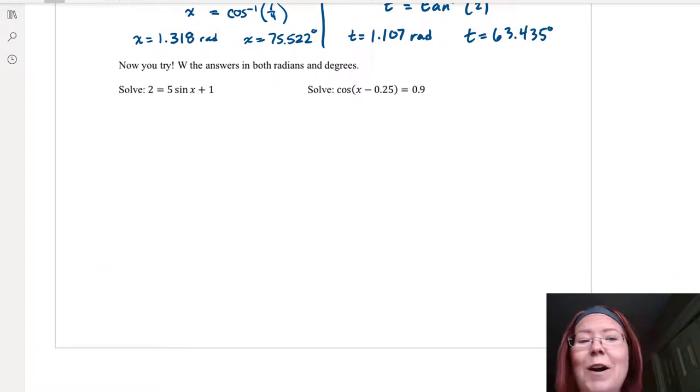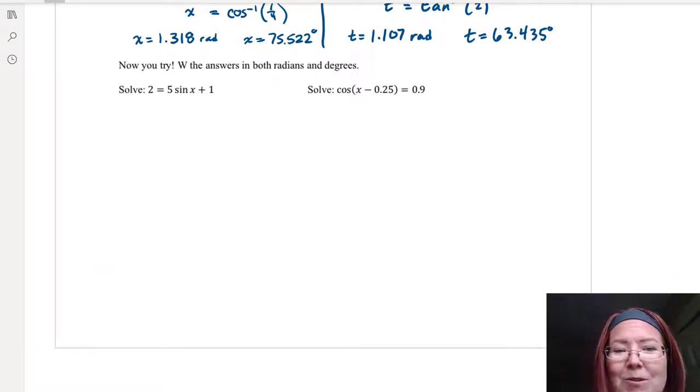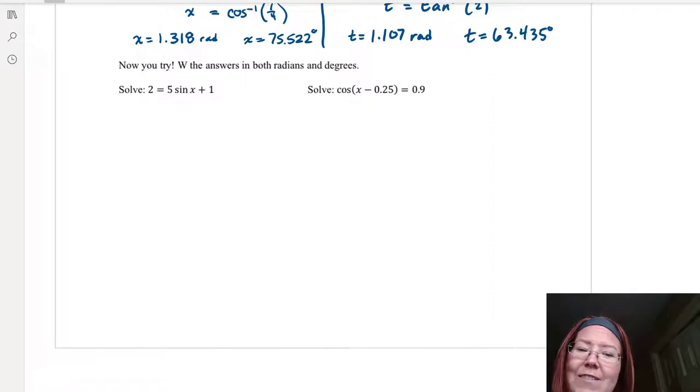So finally I want you to try this. Two equations for you to solve. Write the answers in both radians and degrees. The first one: solve 2 equals 5 sine x plus 1. The second one: solve cosine of x minus 0.25 equals 0.9. Pause the video, give it a try, and then come back when you think you have an answer.